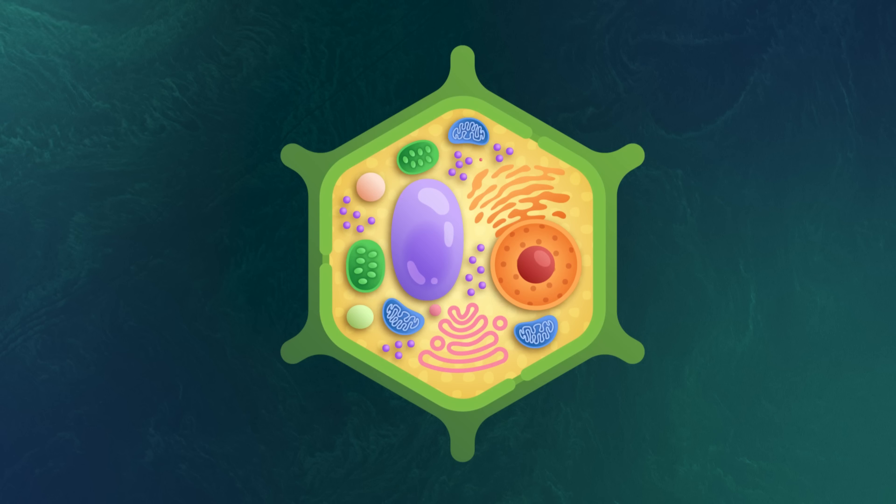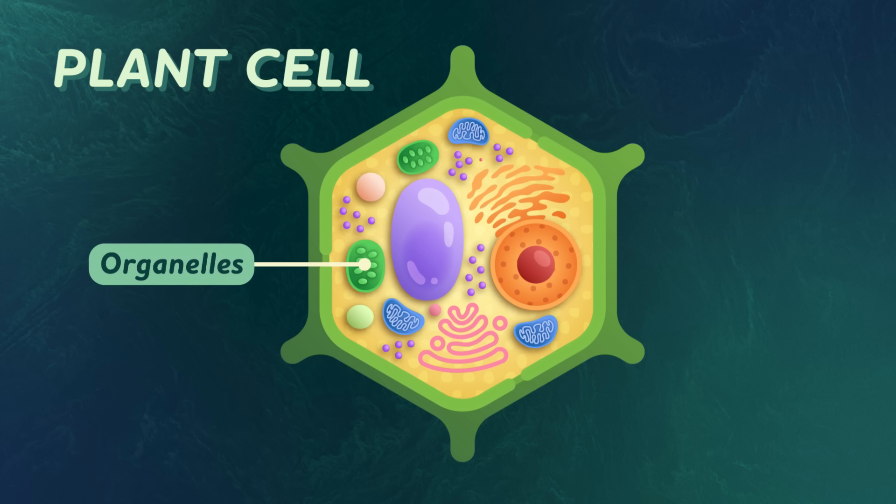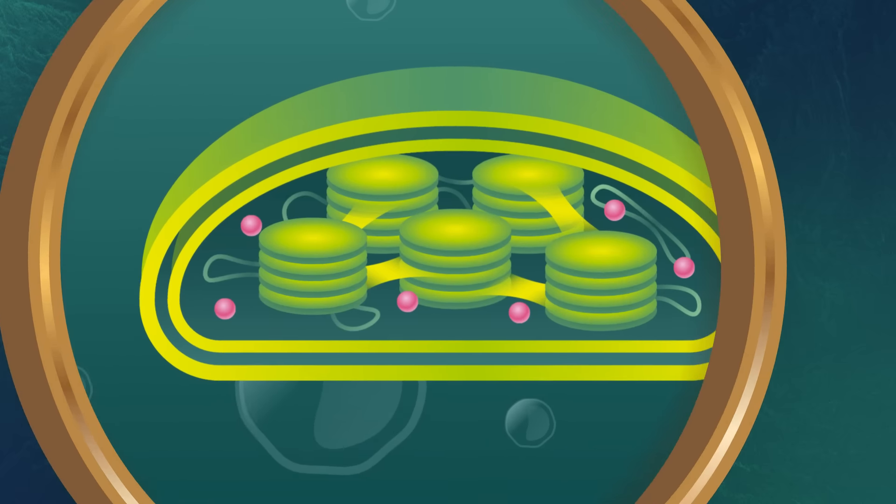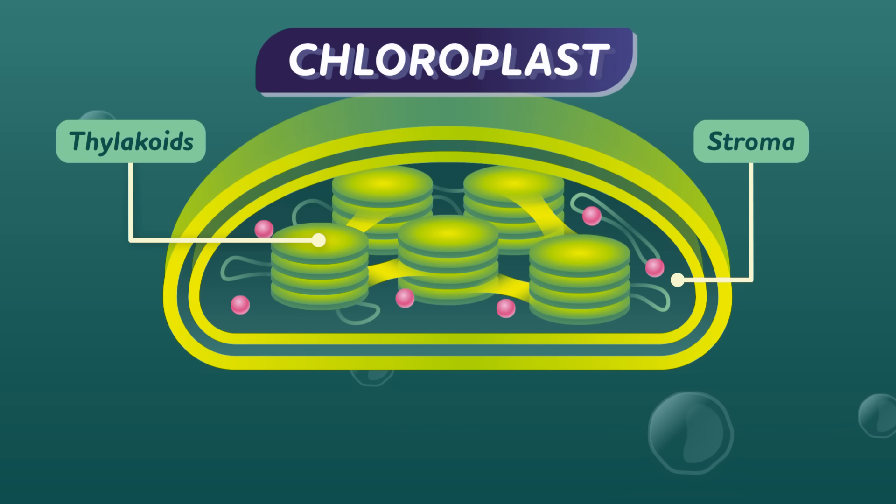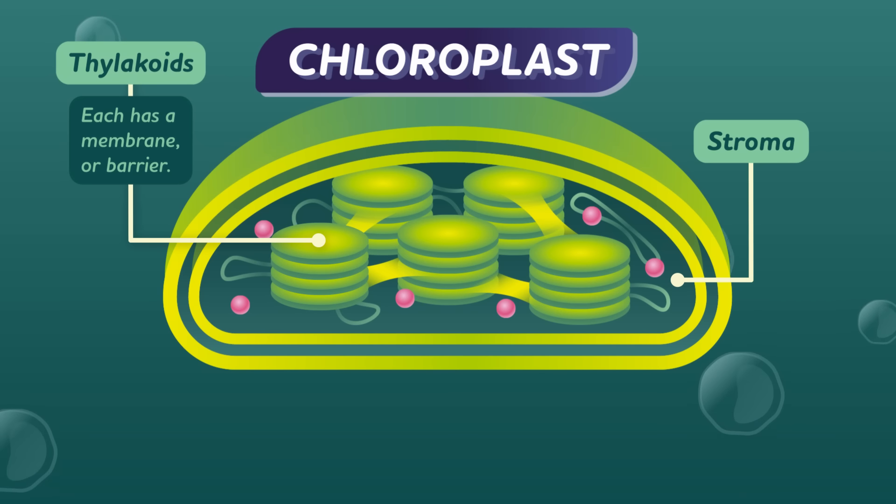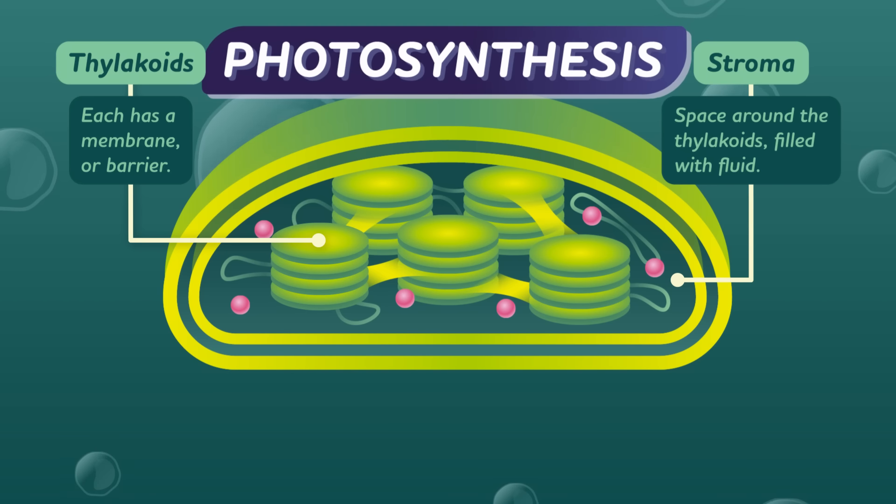But let's get microscopic. Photosynthesis happens inside cells. Even more specifically, it happens inside little structures called organelles within those cells. And the specific organelles are called chloroplasts. If you zoom in on a chloroplast, you'll see something that looks like a bean. And if you open that bean up, you'll see two main areas, the thylakoids and the stroma. Thylakoids look like little green coins, and they sit in stacks. Each thylakoid has a membrane or barrier, and the stroma is the space surrounding the thylakoids, and it's filled with fluid. Each of these areas houses a different step in photosynthesis.